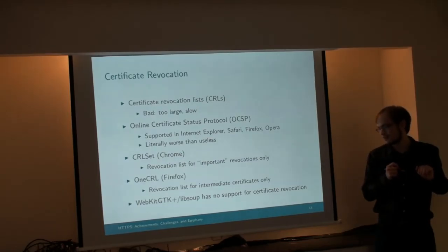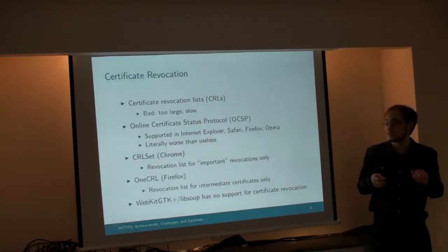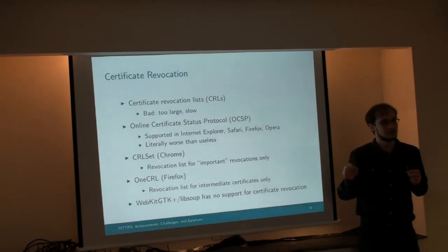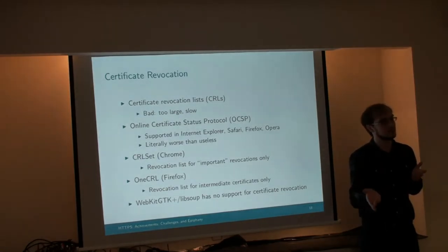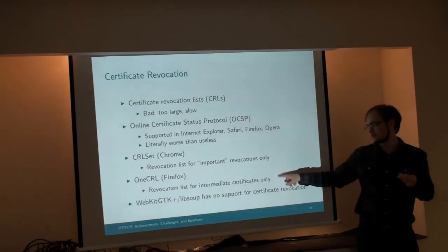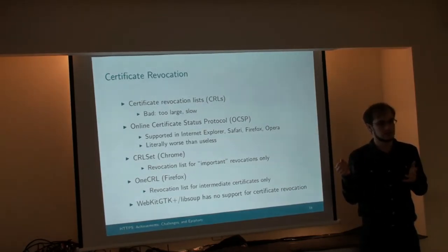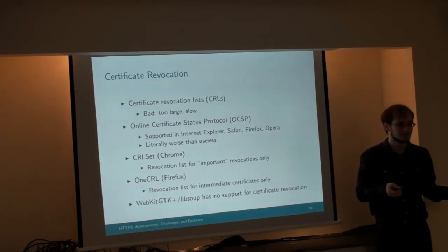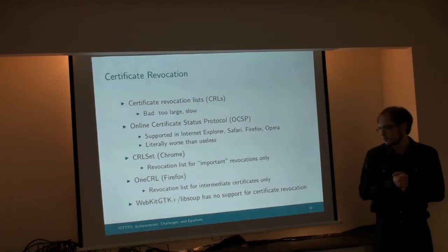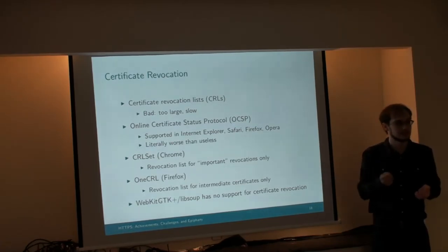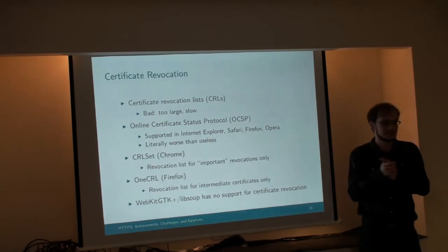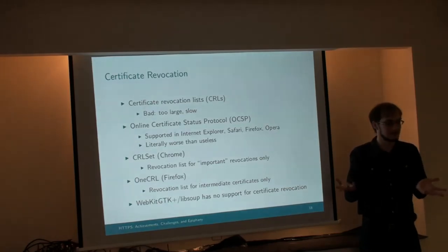OneCRL is Firefox's solution — it's again a certificate revocation list, but they only put intermediate certificates on it, which is how they guarantee it stays small. So if something bad happens to an intermediate CA certificate, Firefox will detect that and keep users safe. But if something happens to an individual website certificate, you're out of luck. We don't really have any solution that provides revocation for individual websites and also doesn't suck. This is going to be a problem for the future that someone else needs to solve.